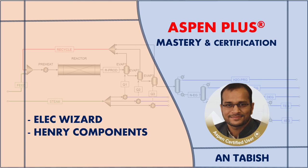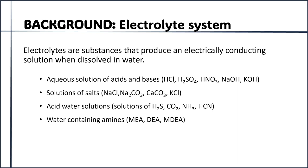Just a quick background about the electrolyte system: electrolytes are the basic constituents of the electrolyte system, and these are the substances that produce electrically conducting solutions when dissolved in water. Typical examples include aqueous solutions of acids and bases — for example, hydrogen chloride and sodium hydroxide. When acids are dissolved in water they produce hydrogen ions, and when bases are dissolved they produce hydroxyl ions. Another type is solutions of salts, for example sodium chloride.